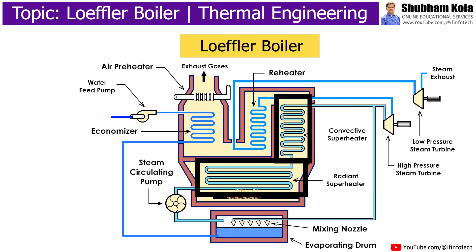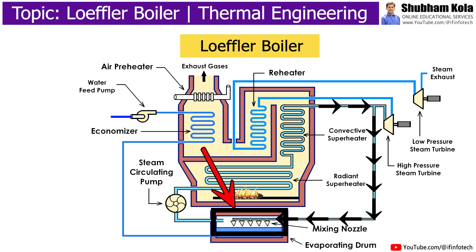From the superheater, about one-third of the superheated steam passes to the high-pressure steam turbine, which is used for rotating the turbine blades for generation of electricity. The remaining two-thirds is used to evaporate feed water in the evaporating drum.